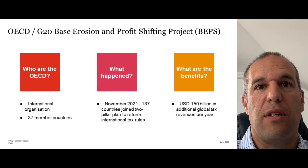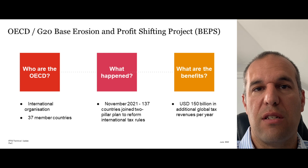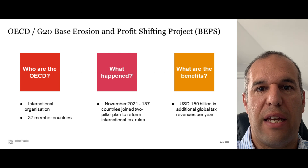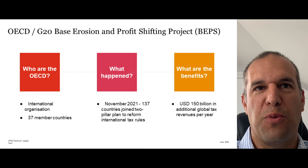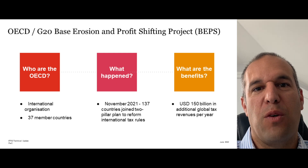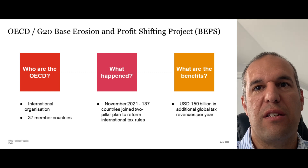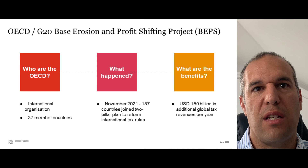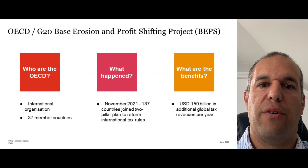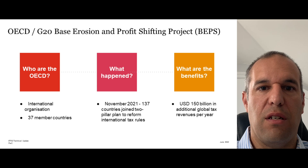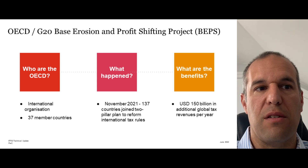Back in November 2021, 137 countries signed up to a two-pillar plan to reform international taxes. They estimated that if everyone signs up to these new rules, it'll generate approximately $150 billion in additional tax revenues on an annual basis.